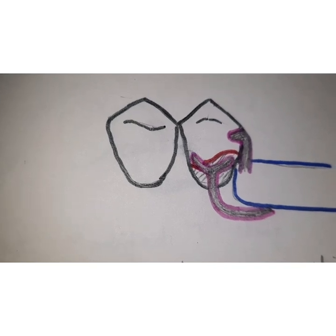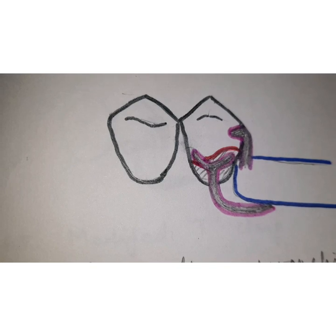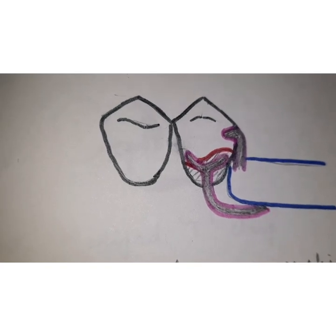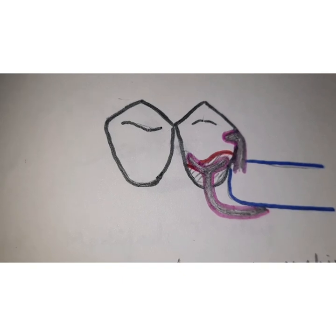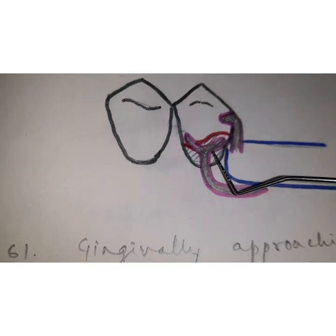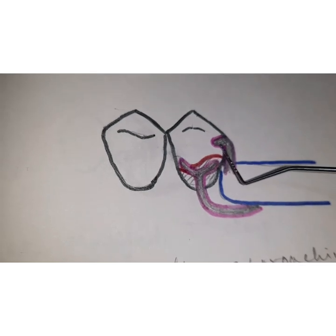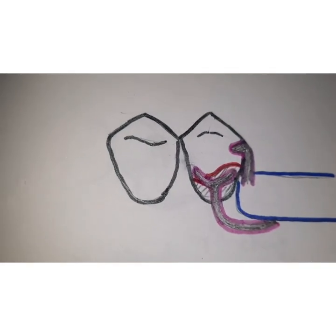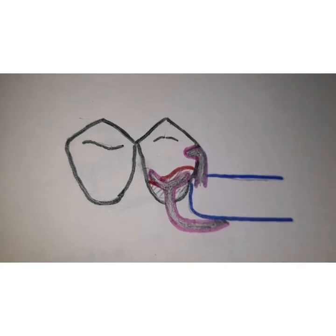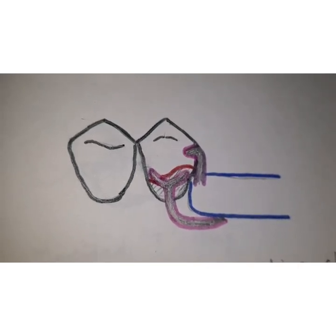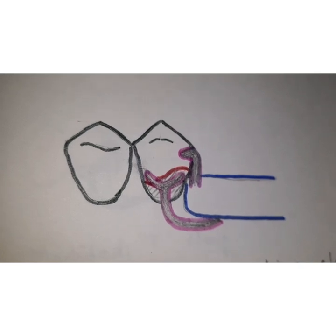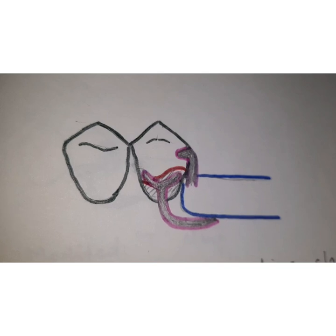The clasp terminal should engage into the distal undercut — that means the bar clasp is used to engage a retentive undercut adjacent to the edentulous area. If the undercut is on the other side, a circumferential clasp should be used. The retentive terminal or tip of the bar clasp should always point towards the occlusal surface, never towards the gingival. Another design feature is that the bar clasp provides limited bracing action because it has only a limited three-point contact, unlike the circumferential clasp which provides 180 degrees of continuous bracing.